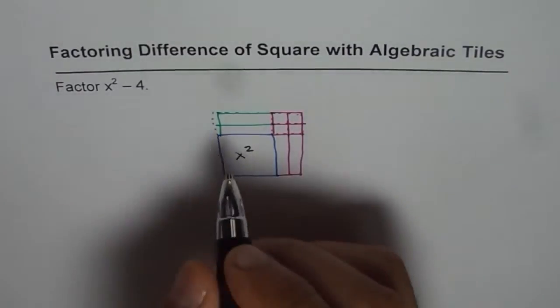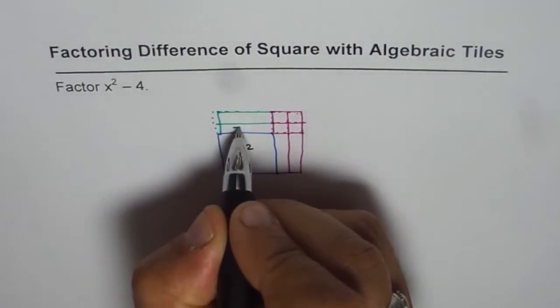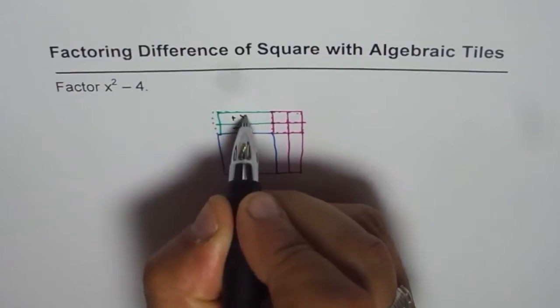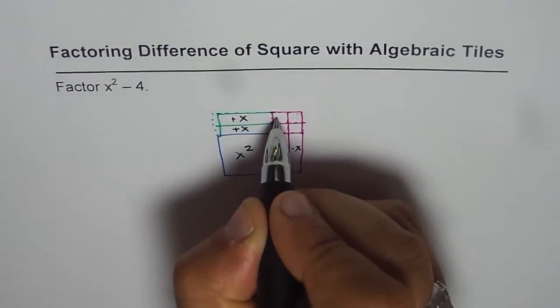So the dimensions of this rectangle are, so we have x squared and this is plus x. This is also plus x. These are minus x. These are minus 1's.